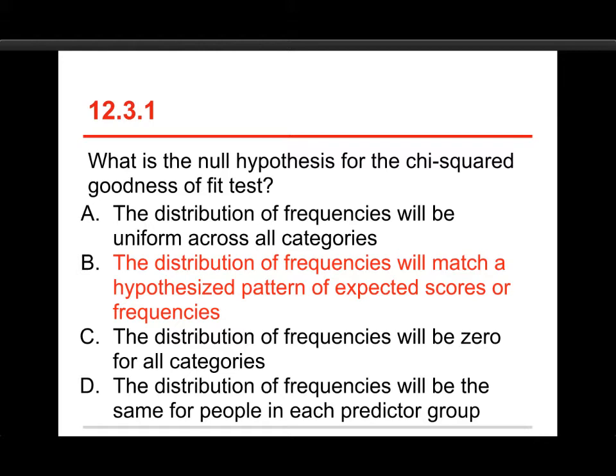Now, I should mention that A could be correct, but that's only if the particular pattern that you expect is uniform. B is the more general answer, and so B is the one that we're marking correct, because it talks about the hypothesized pattern of expected scores or frequencies.